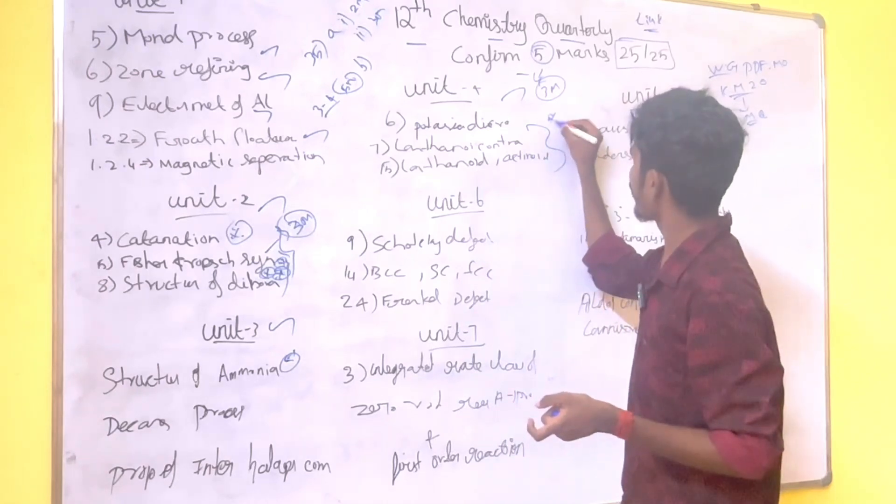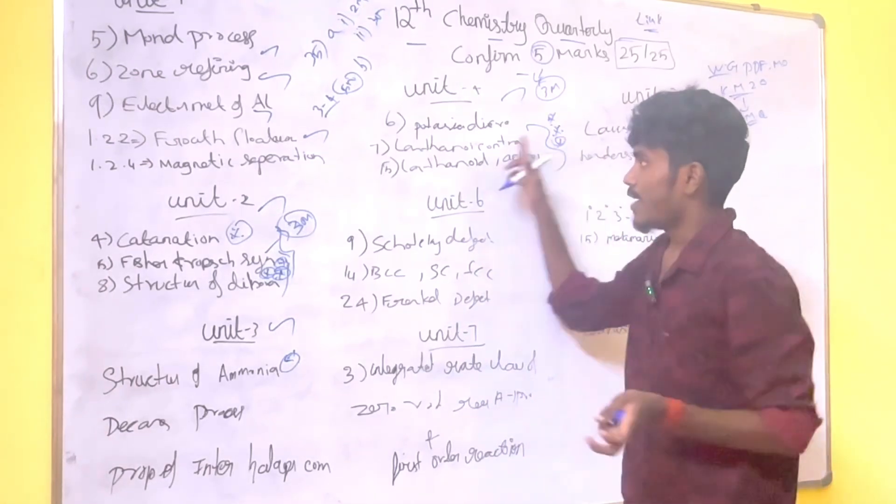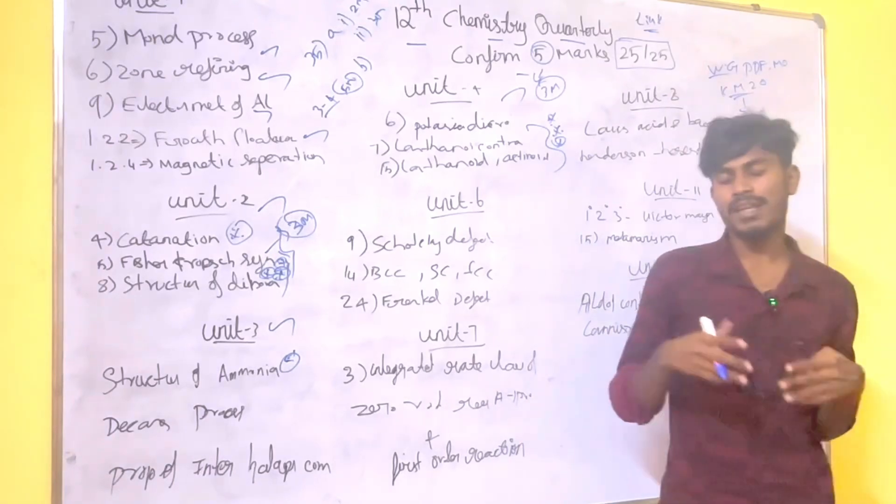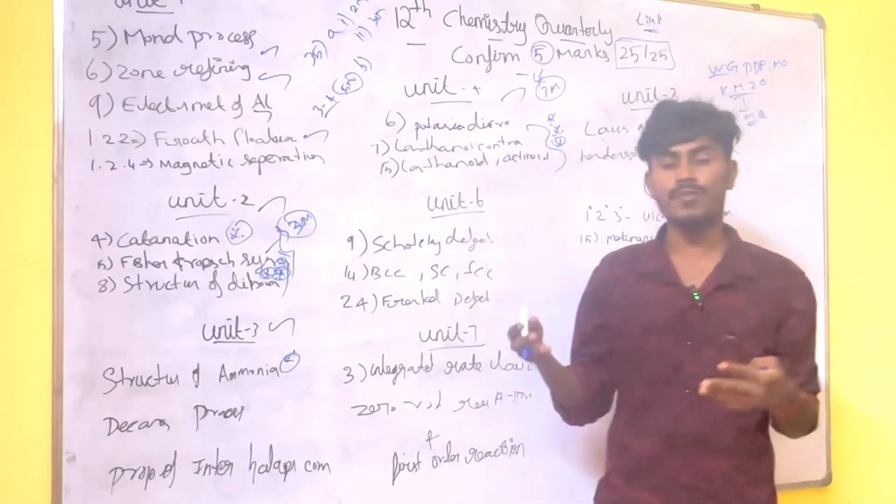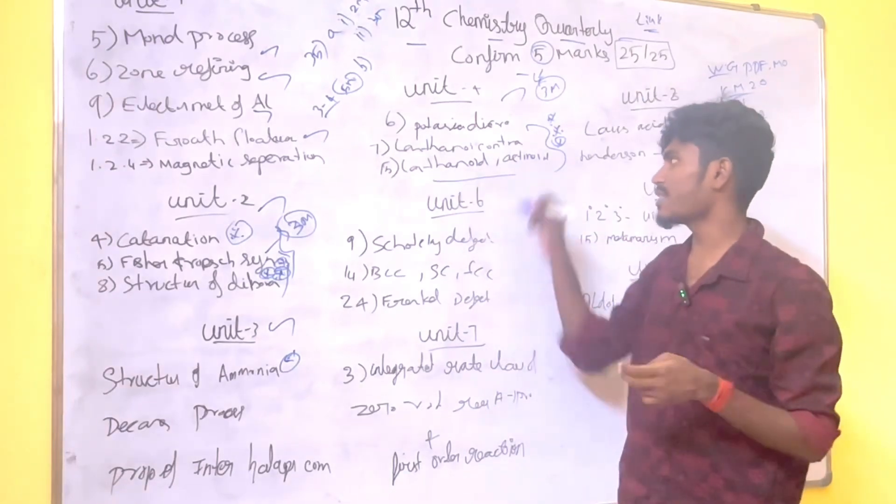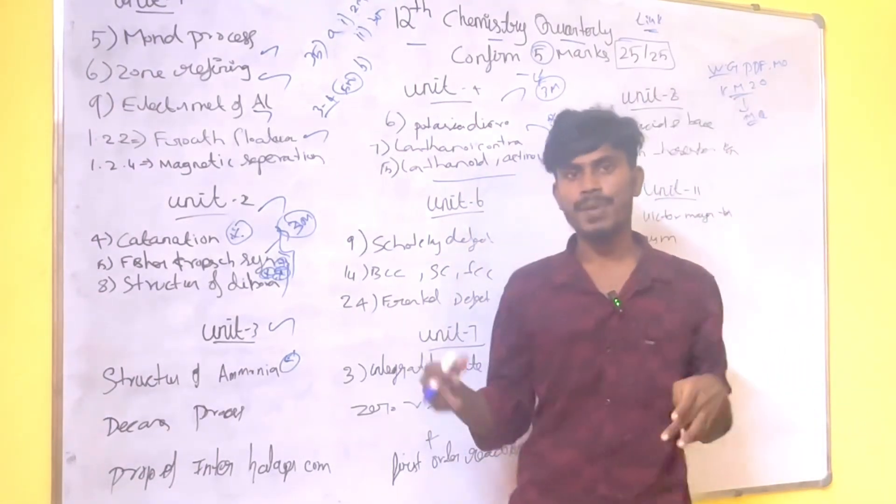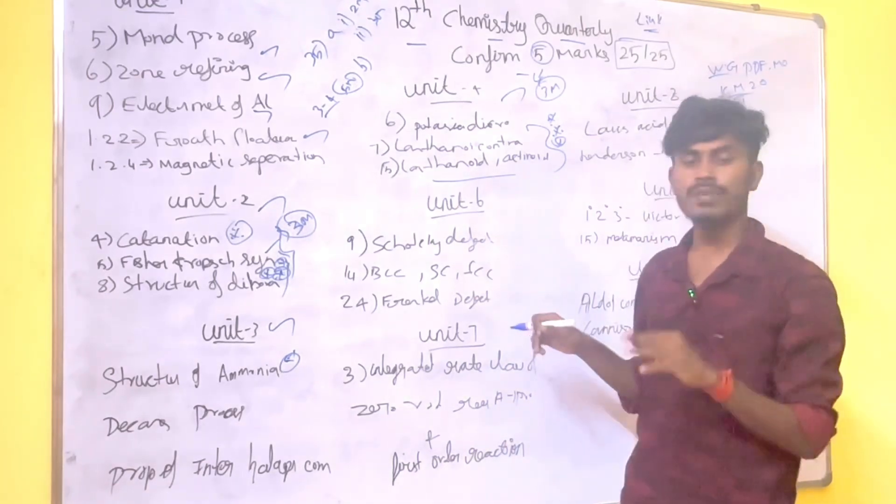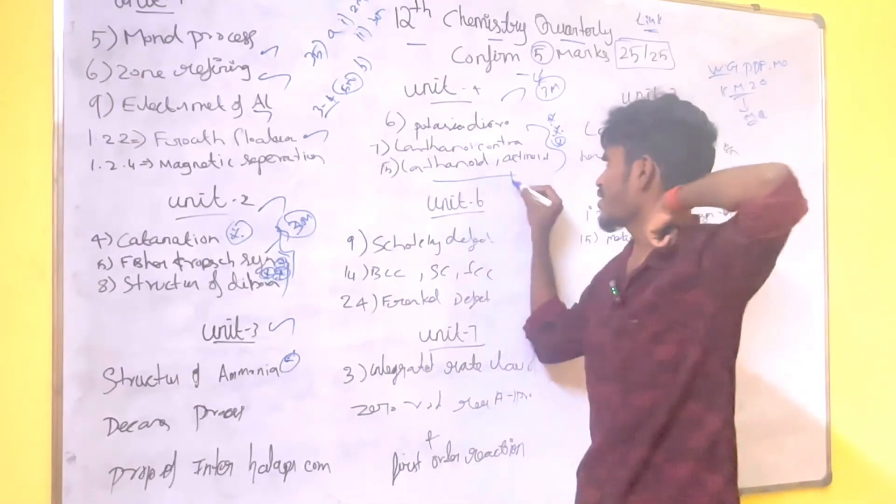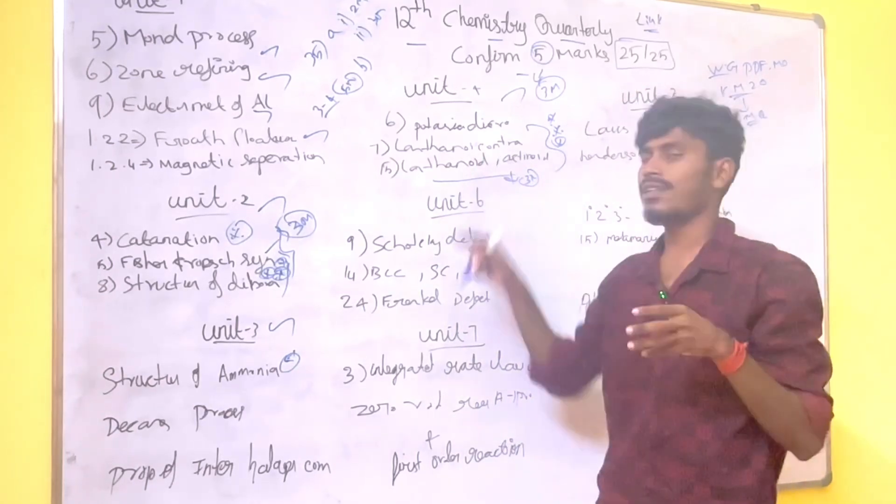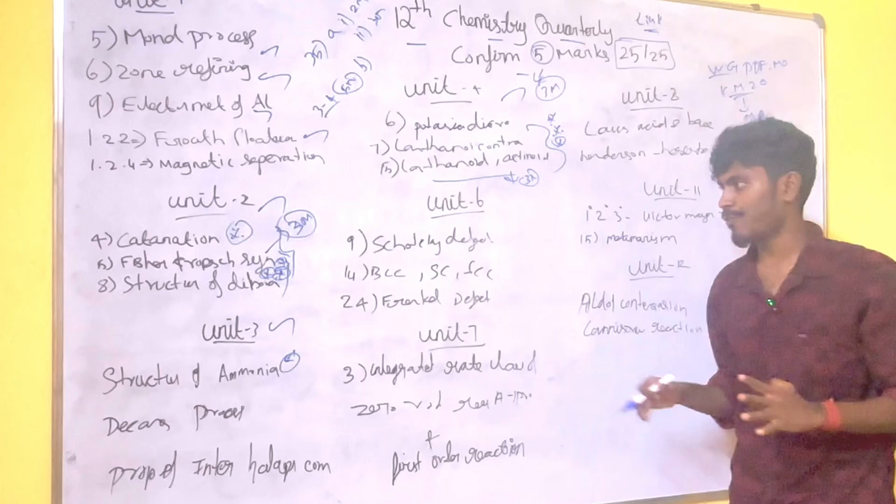In unit 4, if you look at potassium dichromate, the question is very important. 7th and 15th is very important. Which is lanthanide contraction. What are the effects of lanthanide contraction? Another one is lanthanide and actinide comparison. Compare lanthanide and actinide. It's very important. You can repeat it in 5 marks. You can use this comparison sometimes in 3 marks, but majority of times it is 5 marks. Contraction and effect, that's surely 5 marks.